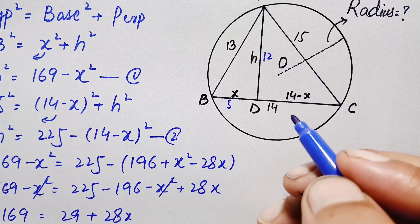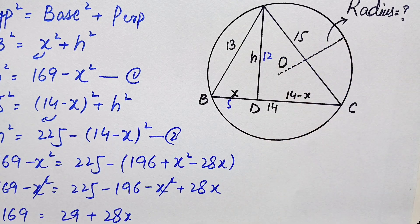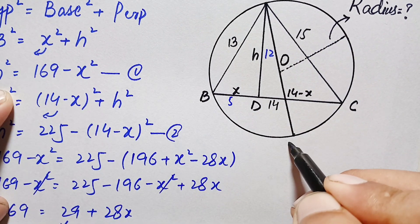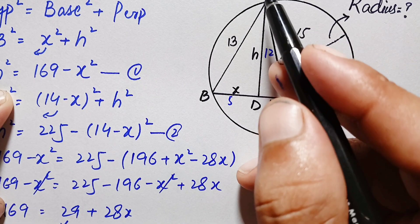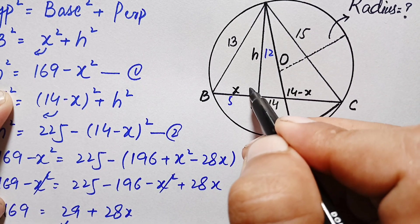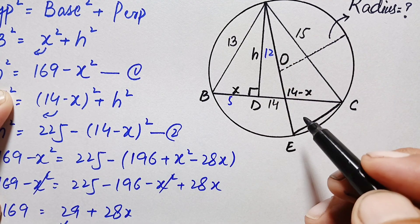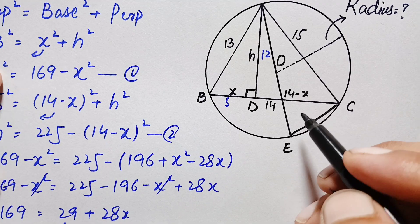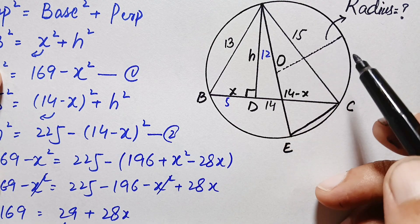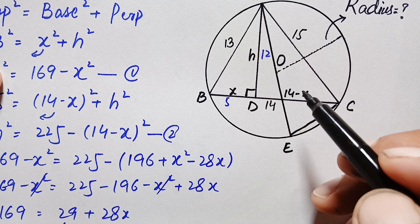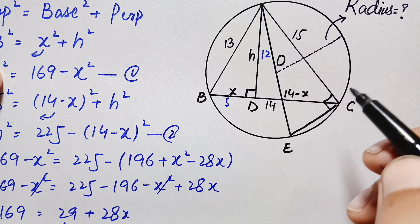Next, we draw a chord from point A through the circle. Let us call this point E. We join point E with point C to form triangle ACE. We use Thales' theorem, which states that if one side of a triangle inscribed in a circle is the diameter, then that triangle must be a right angle triangle. So triangle ACE is a right angle triangle with a 90-degree angle at A.